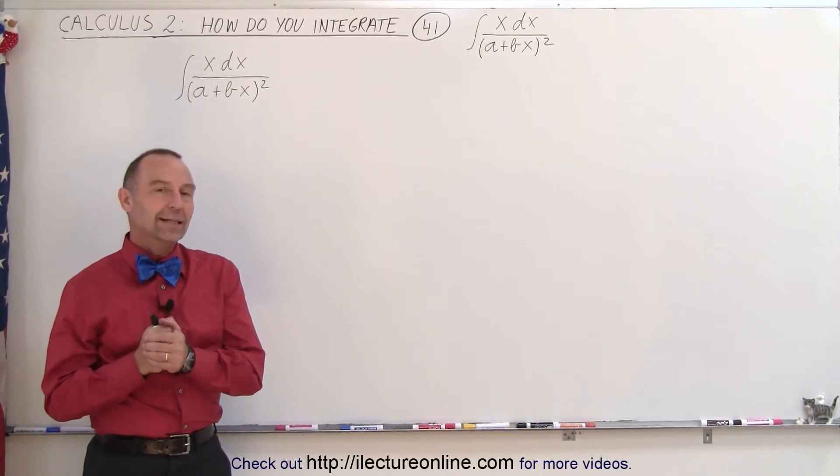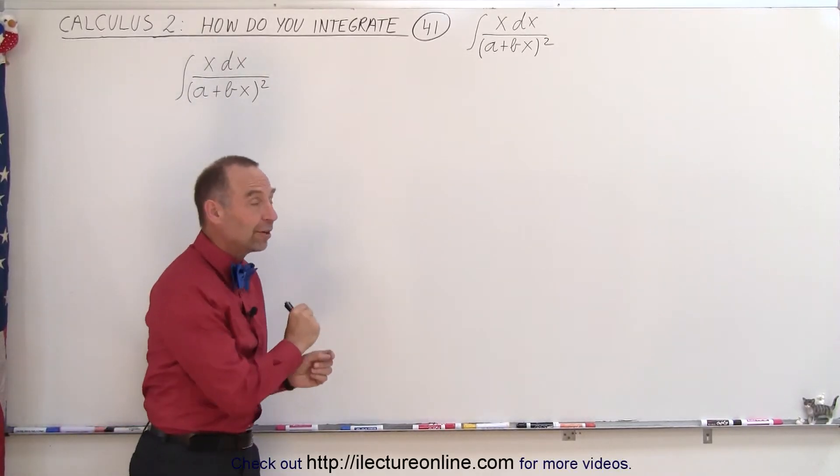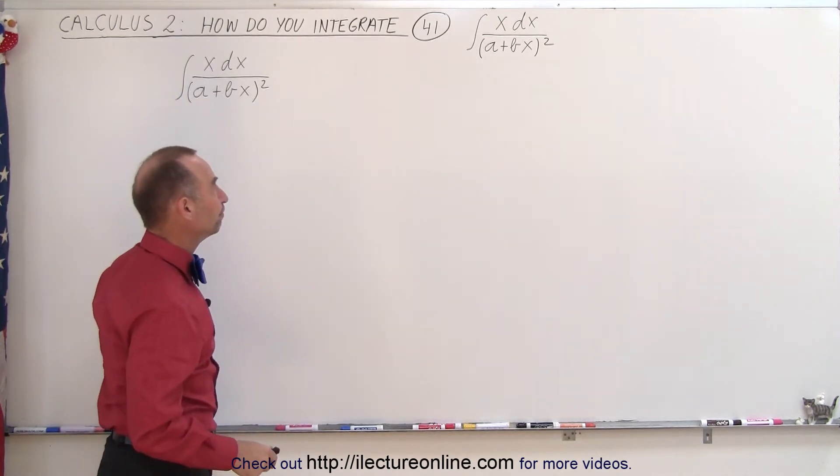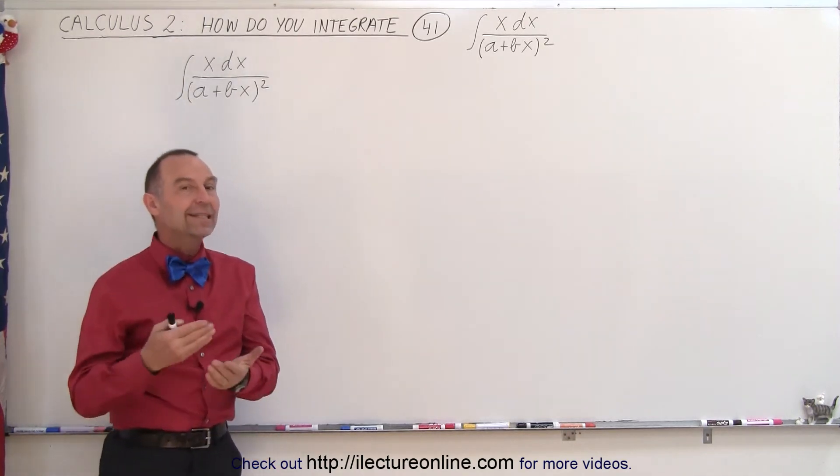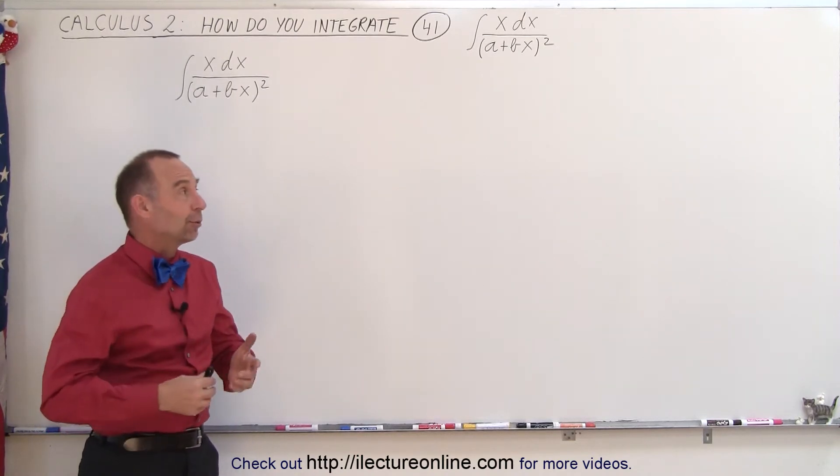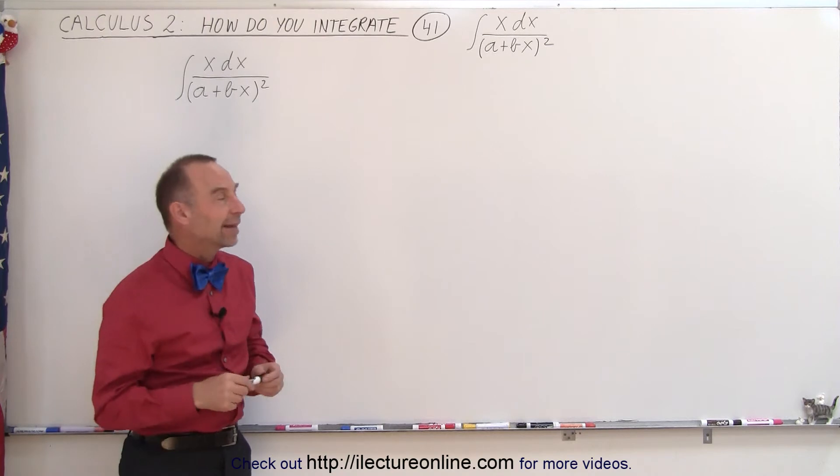Welcome to ElectronLine. Now the difference between this video and the previous video is that the denominator now is squared. So the question is what technique should we use here? It turns out exactly the same even though it's squared. We're still going to make that same substitution.